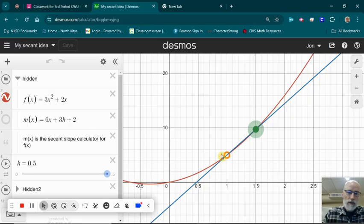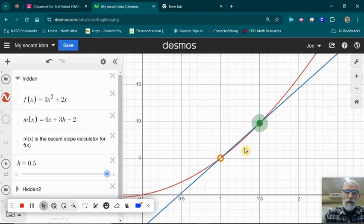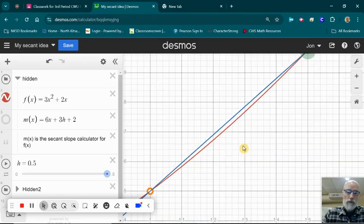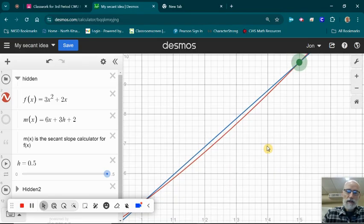Let me zoom out for a second so you can see the red function has quite a bit of curve to it, right, because it's a parabola. Now if we zoom back in on it, the blue is our secant line and the red is the original parabola.